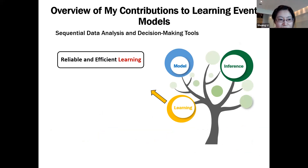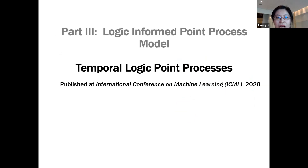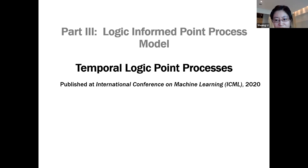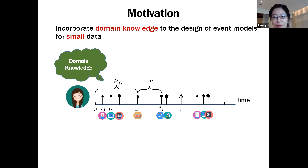As a recap, in this section we discussed a reliable and efficient learning algorithm for sophisticated point process models. Next, I will briefly talk about our recently developed temporal logic point process model. This new model tries to marry point processes with logic rules, where the design of the intensity function is informed by logic rules. This model is especially helpful in small data regimes where we do not have sufficient data to fit a big model well. By incorporating logic rules as prior knowledge, the point process model can work fairly well when data is sparse. The model has wide applications in healthcare, finance, and other areas with rich domain knowledge.